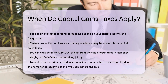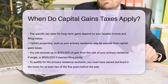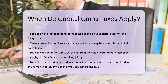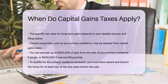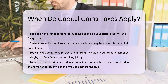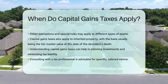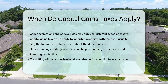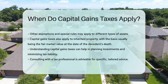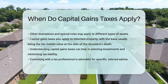Other exemptions and special rules apply to different types of assets. The basis of inherited property is usually the fair market value at the date of the decedent's death. This can affect the amount of capital gains tax owed when the property is sold.